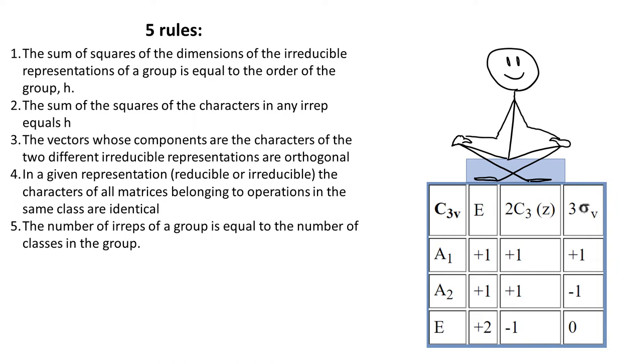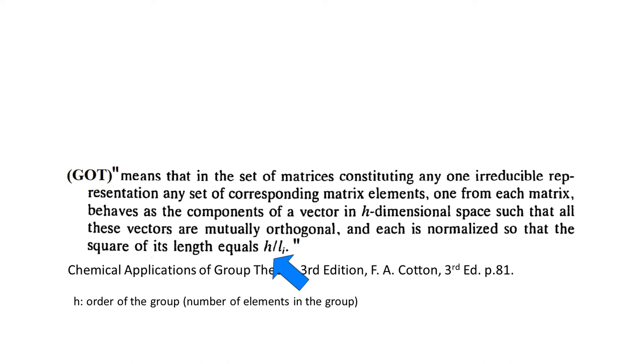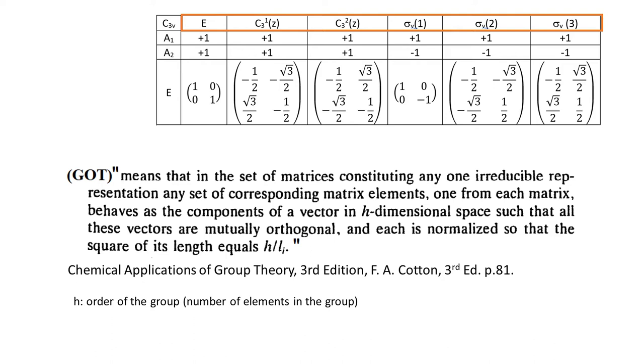This is a summary of the great orthogonality theorem. Let's focus on symbols. H is called the order of the group and it simply equals the number of elements in the group. In C3V group we have E, two rotations and three reflections, so H equals 6.